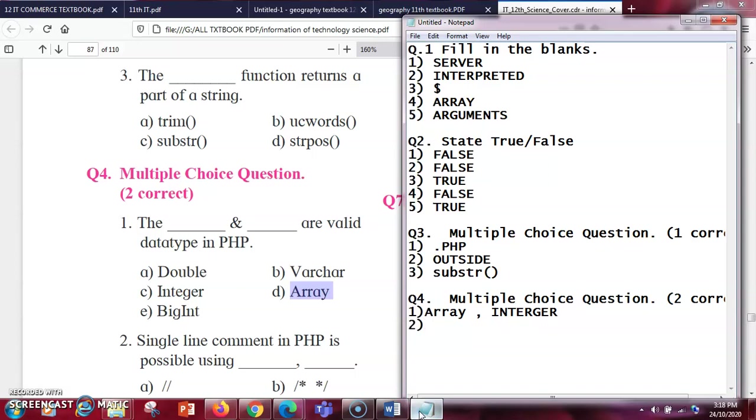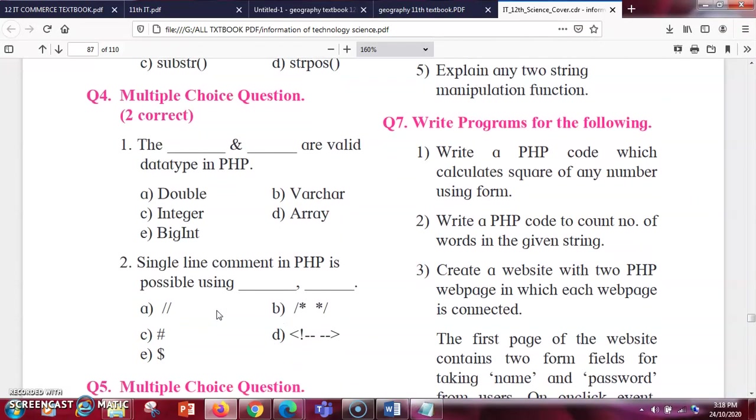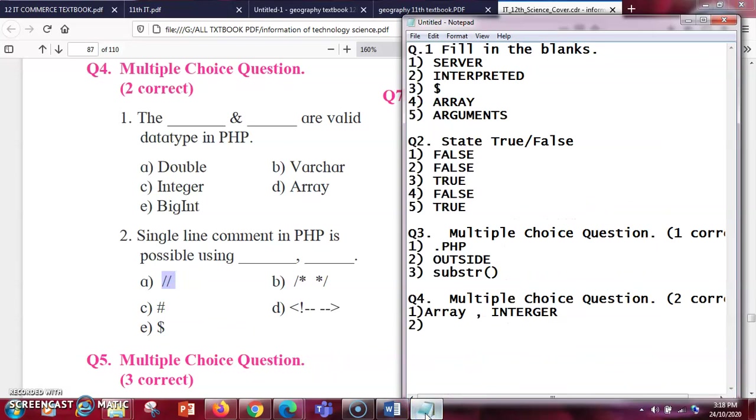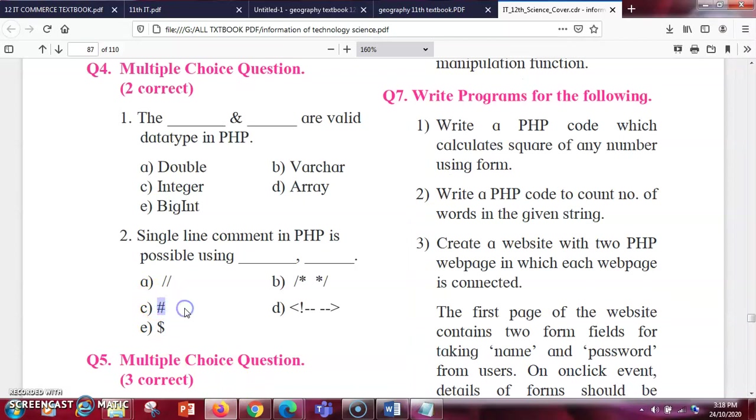Next is single line comment in PHP is possible using. You are going to use single line comment with the help of these signs: double forward slash and hashtag sign. So this will be the hashtag sign which we use for the single line comment.